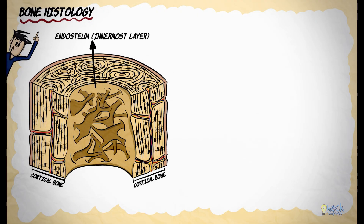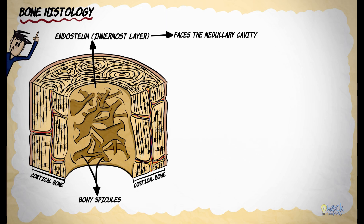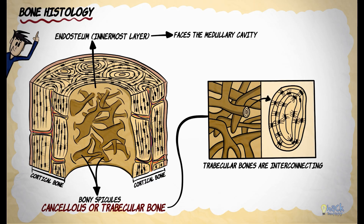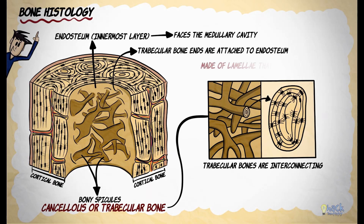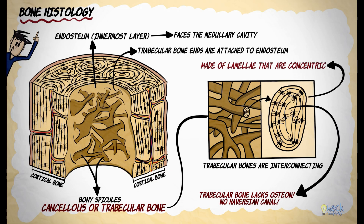The innermost layer of the compact bone is called the endosteum, and it faces the medullary cavity that houses a fine network of bony spicules called the cancellous or trabecular bone. These spicules of trabecular bone are interconnecting and their ends are attached to the endosteum. Like compact bone, trabecular bone is also made of concentric lamellae; however, trabecular bone does not have osteons like compact bone.